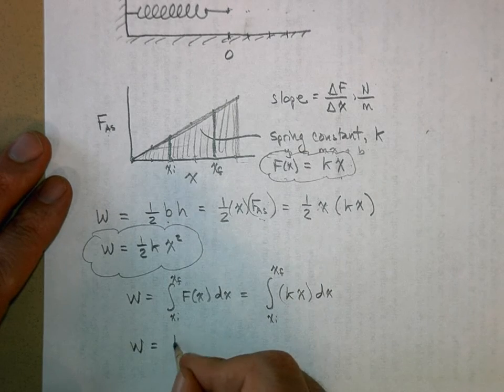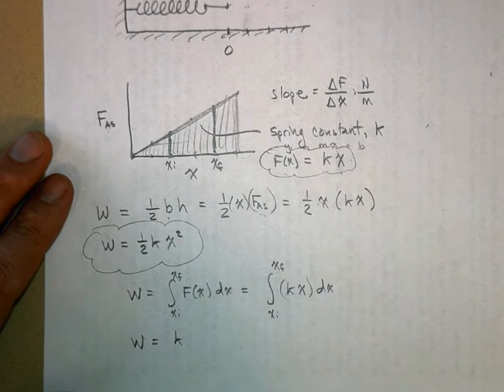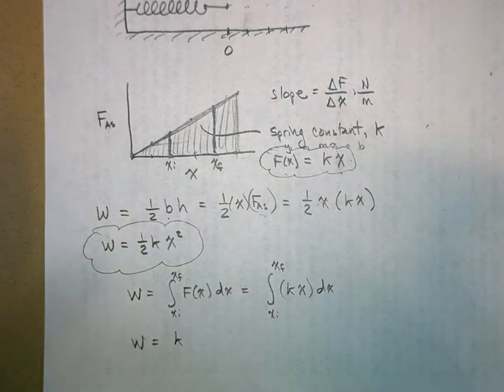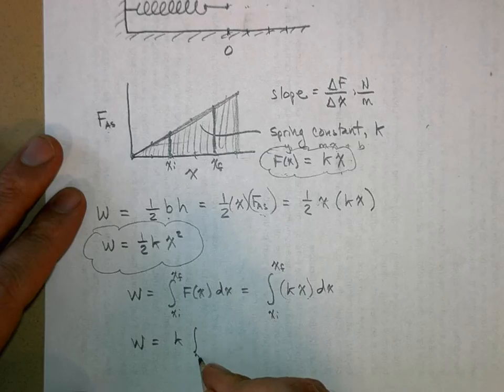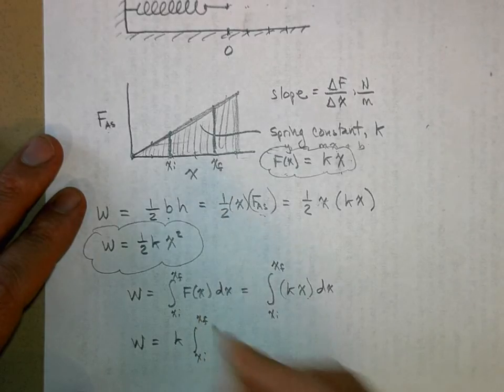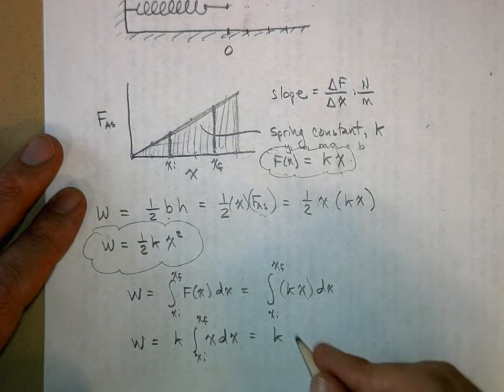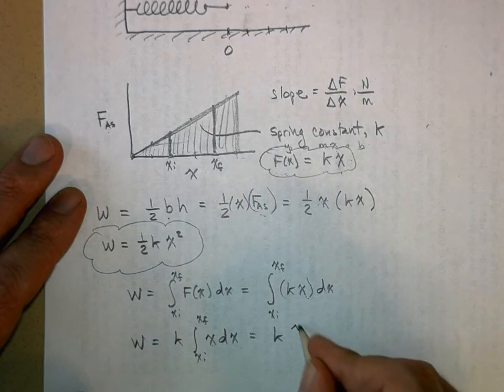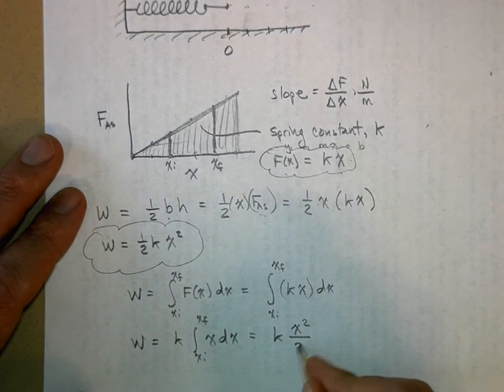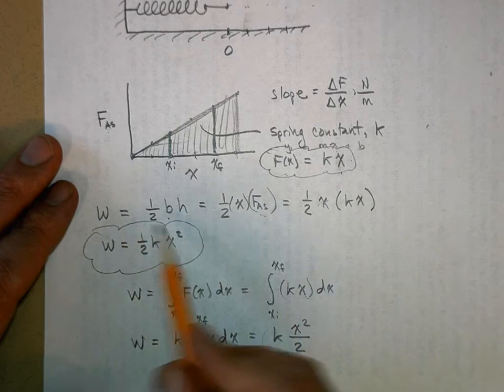So the k comes out - it's a constant, a measure of how stiff the spring is, how many newtons of force you need to stretch it a meter. But then we have the integral from x initial to x final of x dx. Well, this is equal to k times x squared over 2. Hey, look at this - one half kx squared.